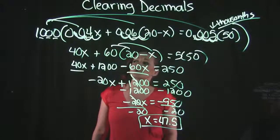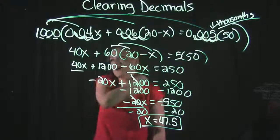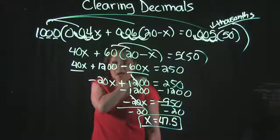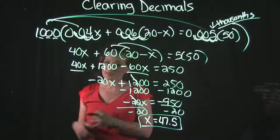Otherwise, again, remember to just multiply by the place value of the most number of decimal spots that you have in a term, and that's how you clear decimals out. That's it for this video. Thank you.